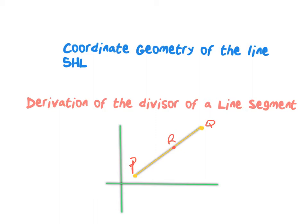Today we're looking at the derivation of a divisor of a line segment. Here I have two axes or a plane with my y-axis and x-axis, and I've placed a line on that plane. The line has two points, begins with P and Q, and along that line, not necessarily in the center, is this point R.